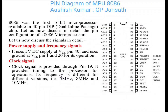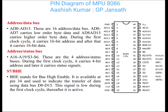It is a 40-pin DIP (Dual Inline Package). Now we will discuss the various pins of 8086. Power supply and frequency signals: it uses 5 volt DC supply at VCC, which is pin number 40, and pin number 1 is VSS which is the ground. Clock signal is provided through pin number 19, which gives timing to the processor for different operations. Its frequency is different for different versions - 5 MHz, 8 MHz, and 10 MHz.